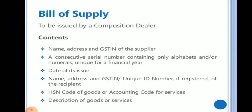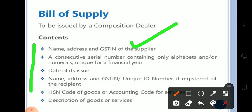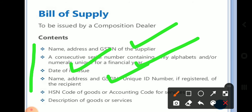The Bill of Supply is to be issued by the composition dealer and includes the following contents: Name, Address, and GSTIN of the supplier; a consecutive serial number containing only alphabets or numerals, unique for a financial year; date of issue; Name, Address, and GSTIN or unique ID number (if registered) of the recipient; HSN Code of goods or service code for services; and description of goods or services.